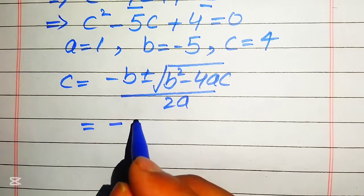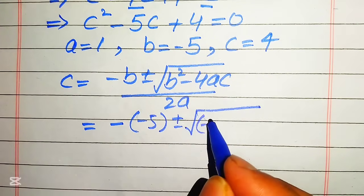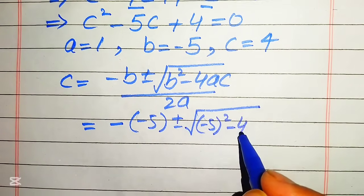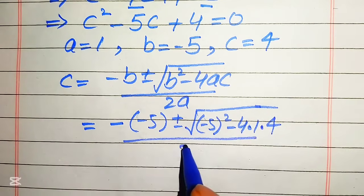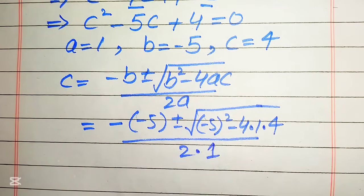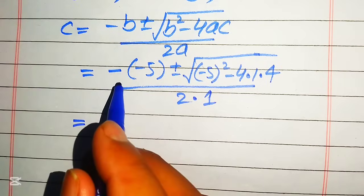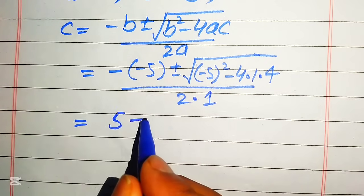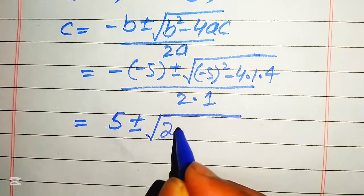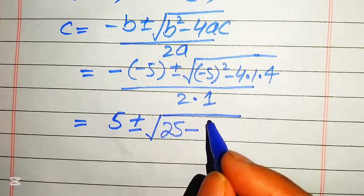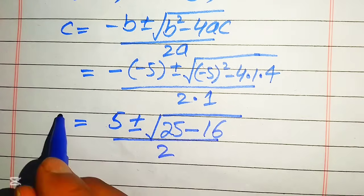We have b equals negative 5, so we write: negative b plus or minus square root of b squared minus 4 times a times c, divided by 2 times a. Substituting, this becomes negative times negative 5, which is positive 5, plus or minus square root of negative 5 squared, which is 25, minus 4 times 1 times 4 which is 16, all divided by 2 times 1 equals 2.